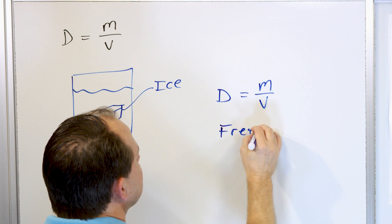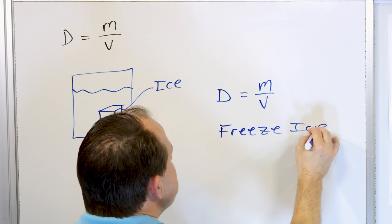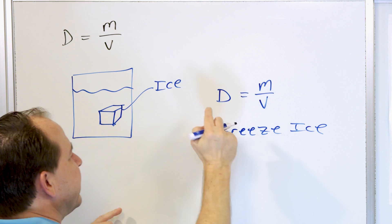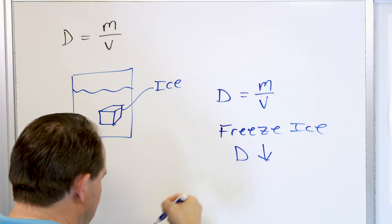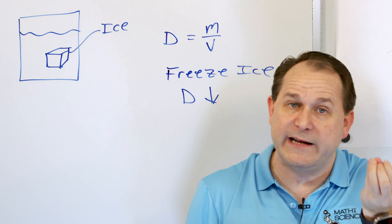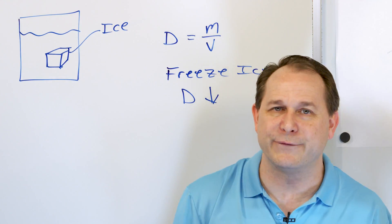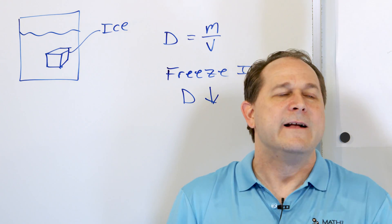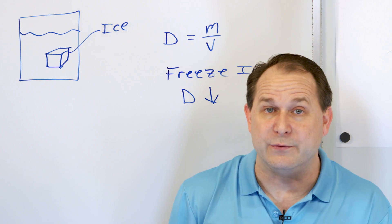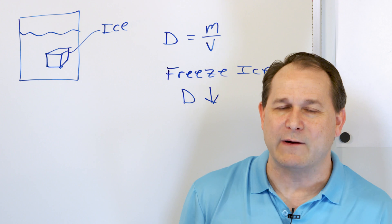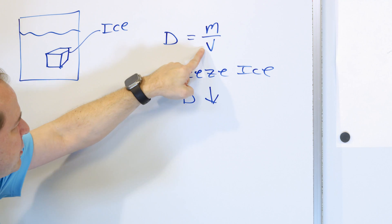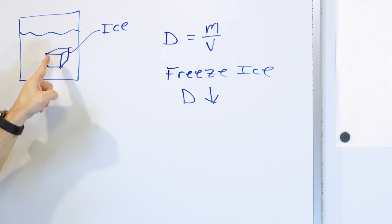When we freeze ice, because the volume actually gets bigger, the density gets smaller. In order for something to float on a liquid, its density has to be smaller than the liquid you're floating in. When the density is smaller than the liquid you're floating in, then you float. If the density is bigger, then you sink. But because the volume gets bigger, the density gets smaller, and that's why ice actually floats to the surface.